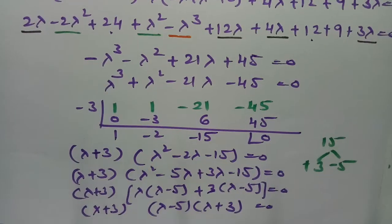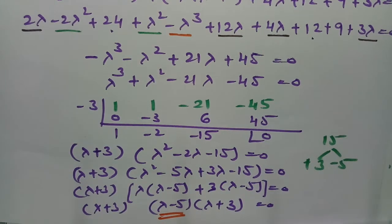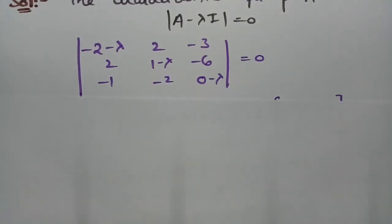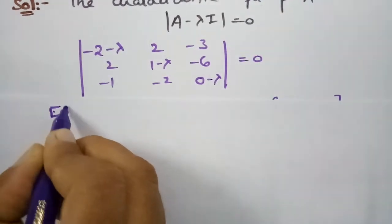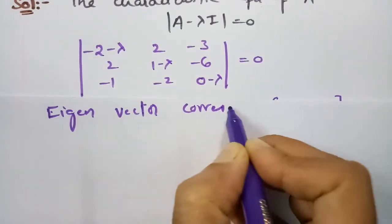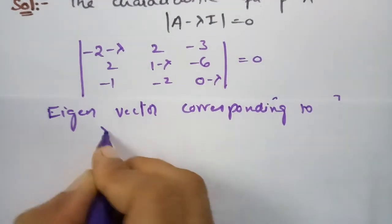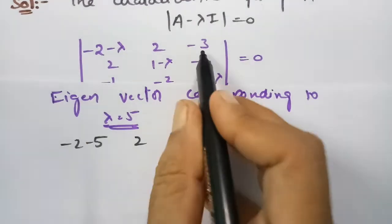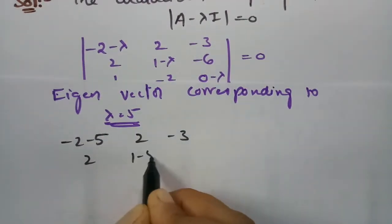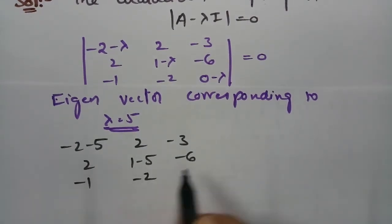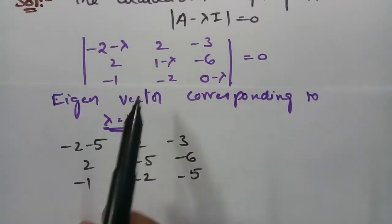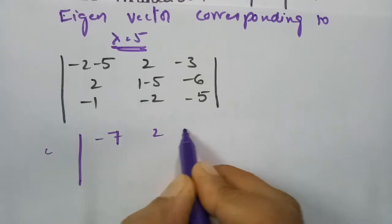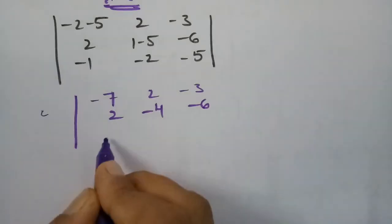For the eigenvector corresponding to λ = 5, we substitute λ = 5 into (A − λI). This gives the matrix: row 1: −7, 2, −3; row 2: 2, −4, −6; row 3: −1, −2, −5. To get a leading 1, I interchange R1 and R3.